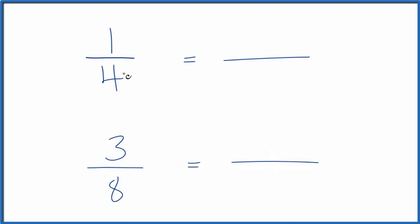So I can see that 4 would go into 8 two times. So if I multiply this by 2 here, but we need to multiply by 2 over 2 because this is just going to give us 1 and that won't change the quantity. So 1 times 2, that gives us 2, and 4 times 2, that gives us 8.